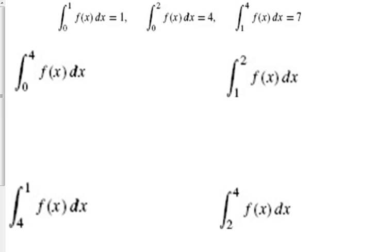So let's look at the integral. 0 to 1 of f of x is 1. 0 to 2 is 4. And 1 to 4 is 7. So if they ask us for the integral from 0 to 4 of this function, well, I'm going to look at the fact that this first one goes from 0 to 1 and then the second one goes from 1 to 4.